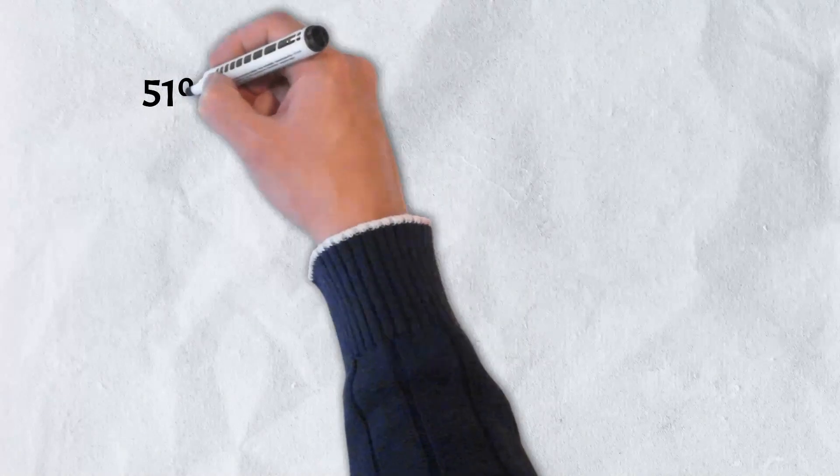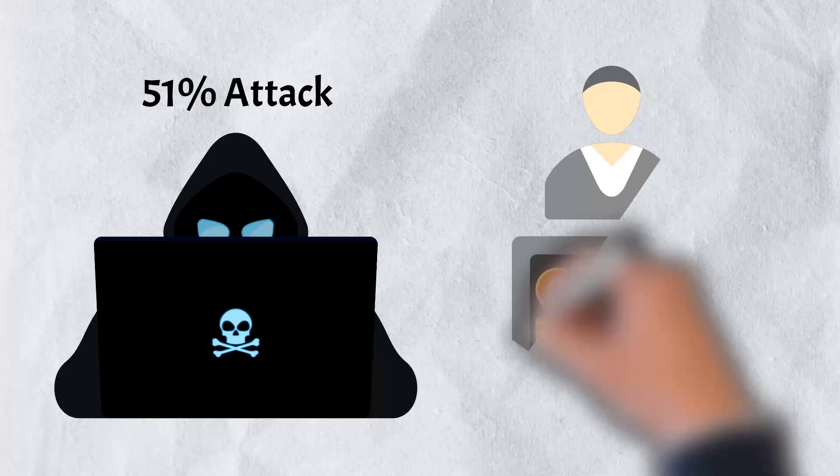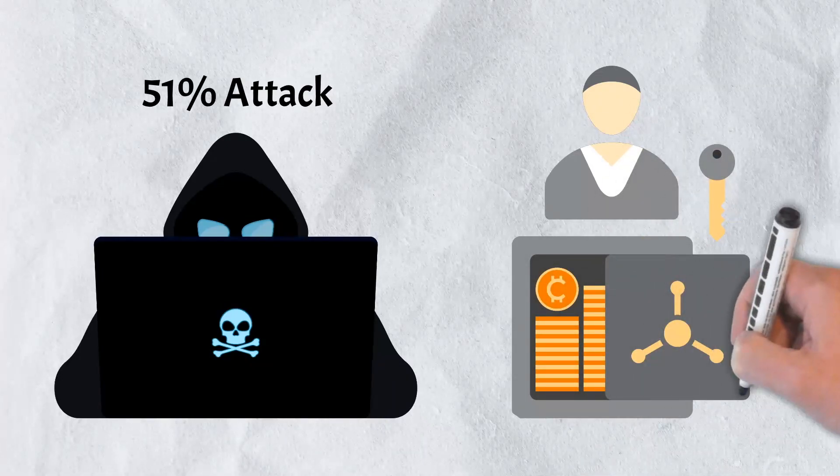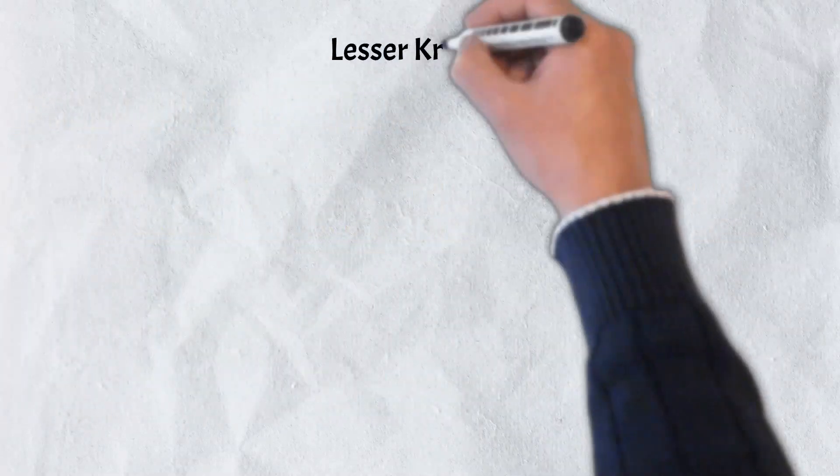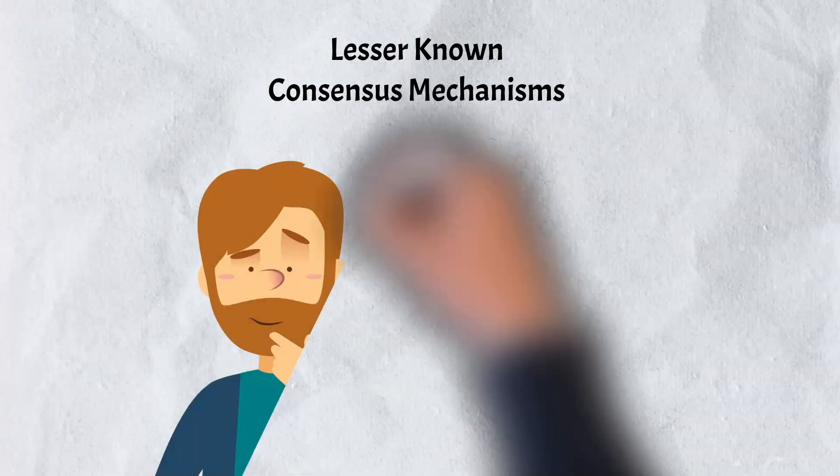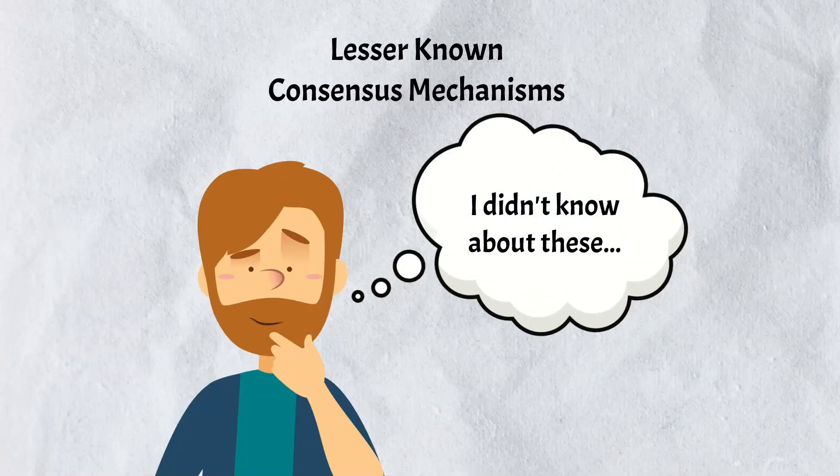Like proof-of-work, there still remains a risk of a 51% attack, although it is unlikely because an individual or group would need to own 51% of the staked cryptocurrency. As previously mentioned, however, there are many different types of consensus mechanisms. Here are a few that you probably haven't heard about.